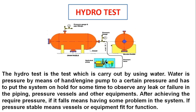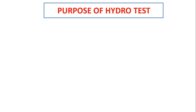The hydro test is the test which is carried out by using water. Water is pressurized by means of a hand pump or engine pump to a certain pressure, and the system is put on hold for some time to observe any leak or failure in the piping, pressure vessels, and other equipment. If pressure drops, it means there is a problem in the system; if pressure is stable, the vessel or equipment is fit for function.